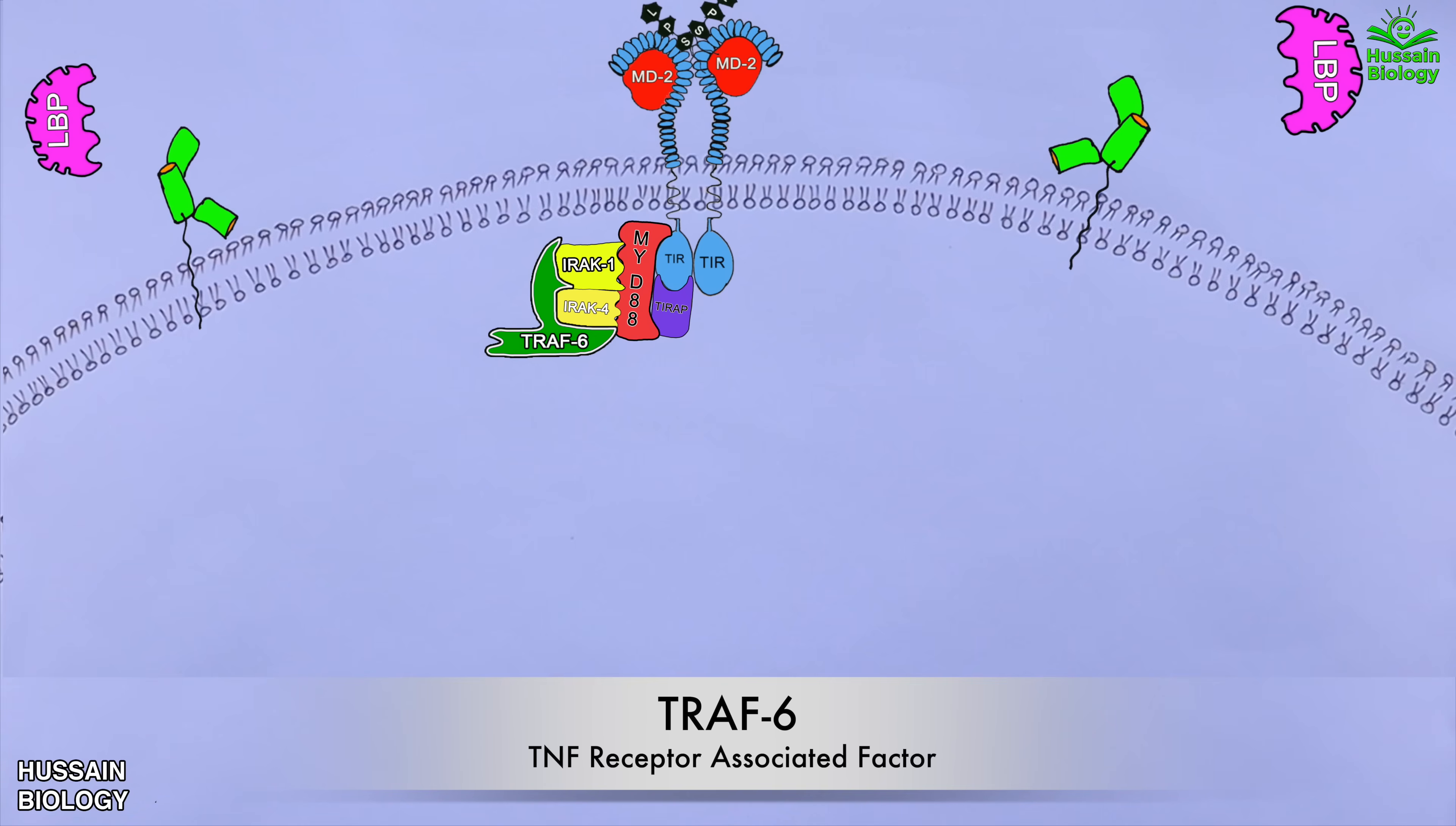Now we also see here that TAB2 protein binds with TRAF6 protein. And in turn this TAB2 binds TAC1 protein thereby bridging the TRAF6 with TAC1. And finally activating the TAC1 protein. Now this TAC1 activates more downstream molecules. Here first of all it activates the IKK protein complex which has kinase activity. Let's keep this activated IKK protein here.